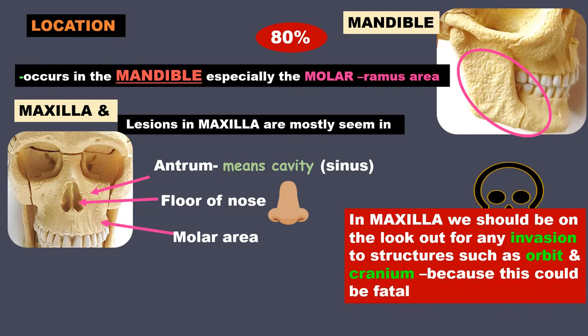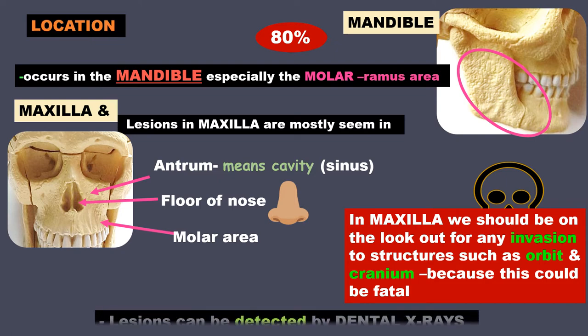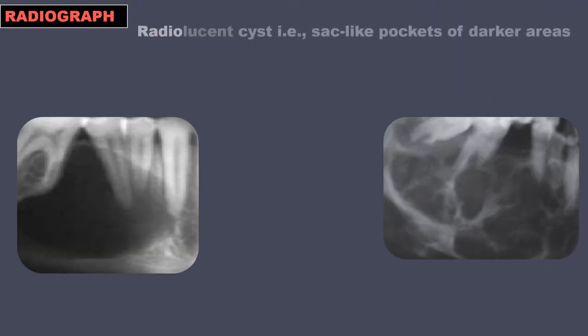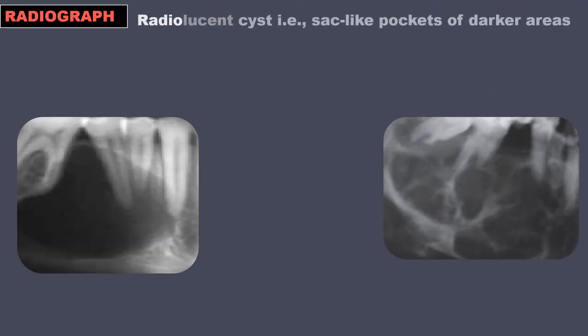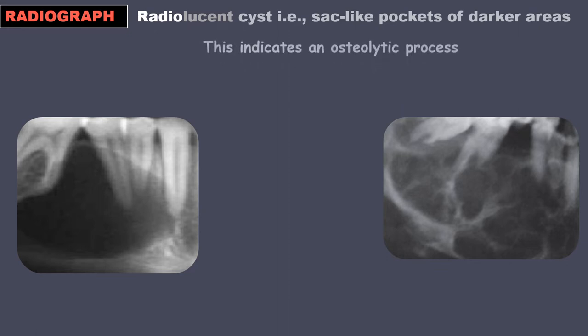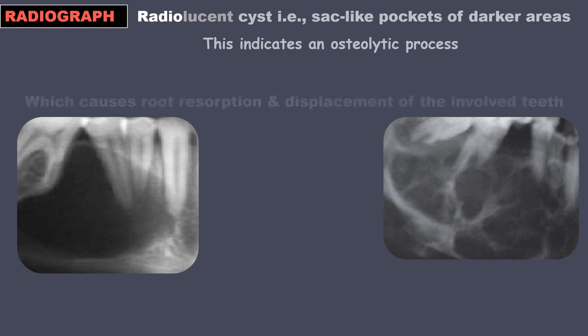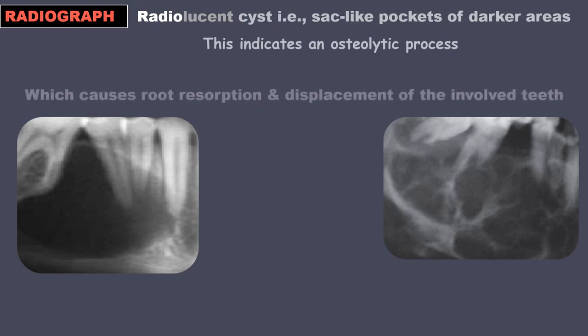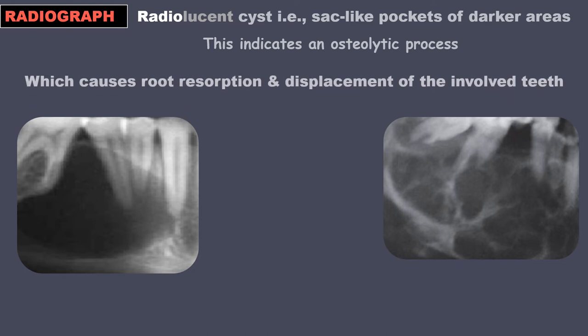How do we detect the presence of ameloblastoma? Lesions can be detected by dental X-rays. X-rays show radiolucent cysts — sac-like pockets of darker areas. This indicates an osteolytic process is going on, meaning bone is getting destroyed, which causes root resorption and displacement of the teeth involved.